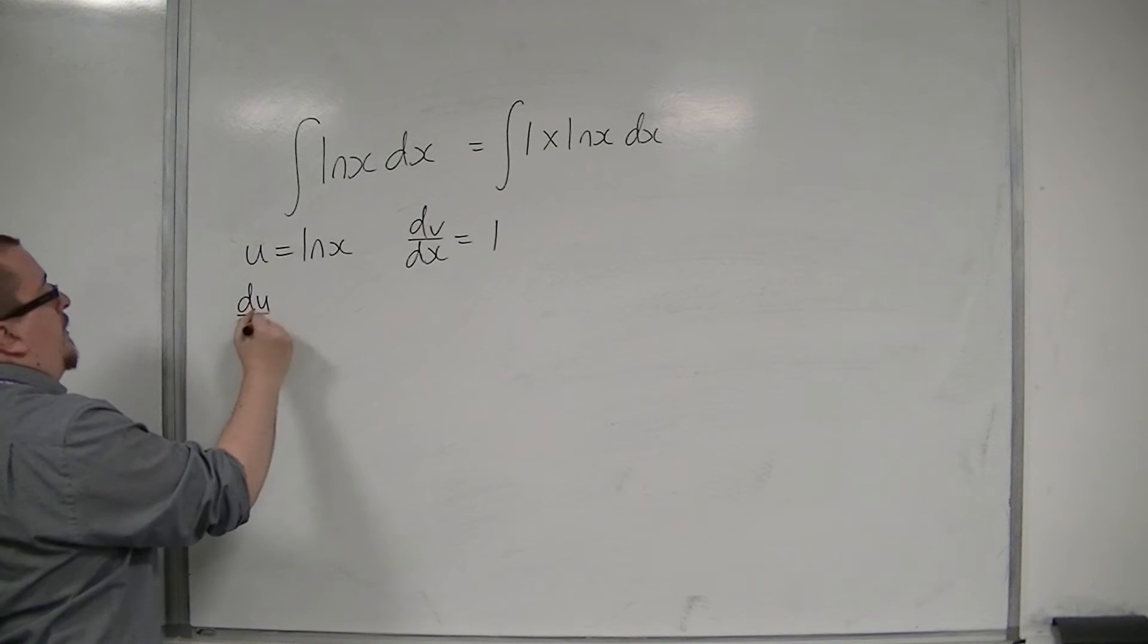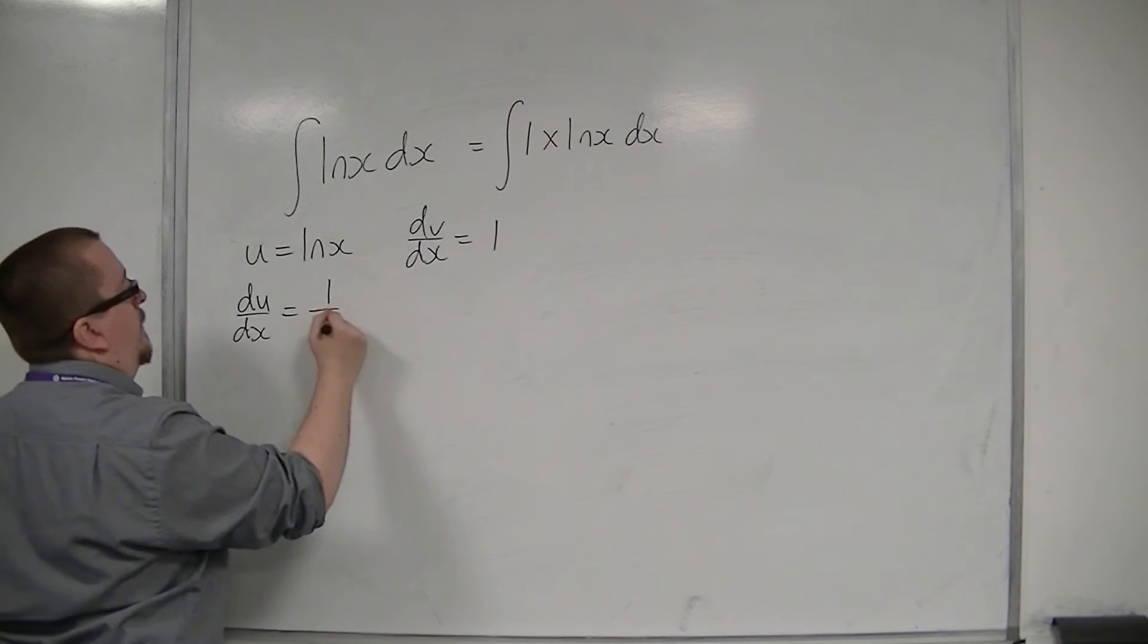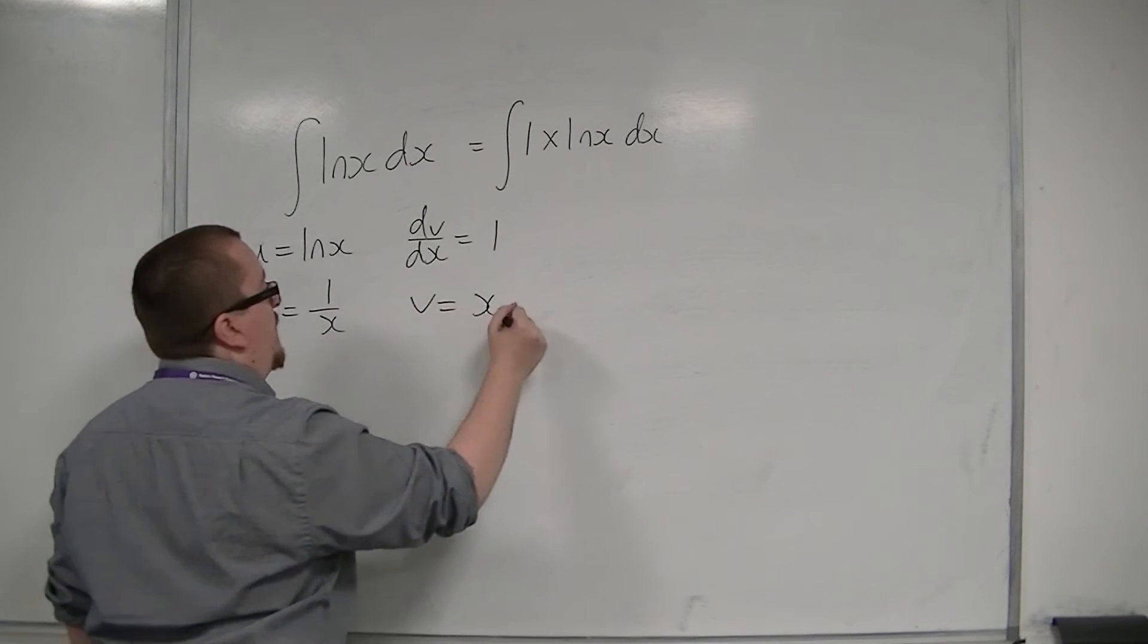So du/dx is 1 over x. v is the integral of 1, which is just x.